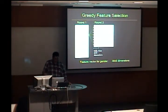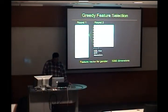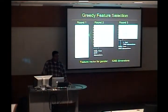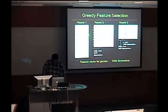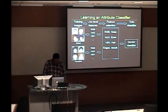Then we go on to round two, where we use that feature to initialize and try adding all the remaining features, find the best one again, and so on for a number of rounds. We typically go five or six rounds. This process takes several hours, but once it's done, you have a gender classifier.